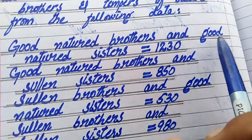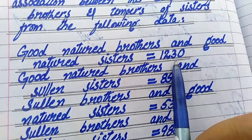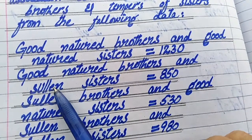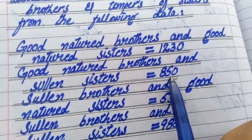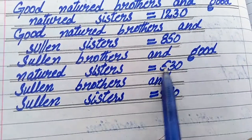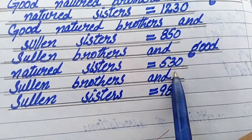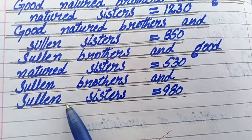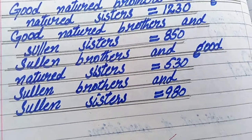Good nature brother and good nature sister: 1230. Good nature brother and sullen sister: 850. Sullen brother and good nature sister: 530. Sullen brother and sullen sister: 980.